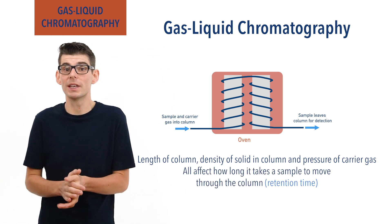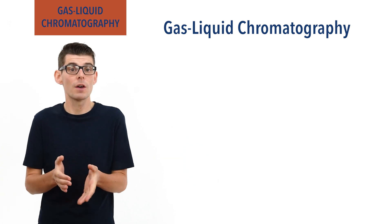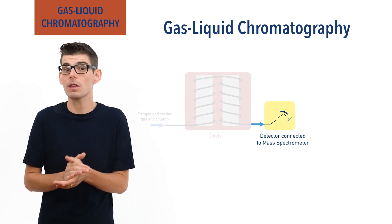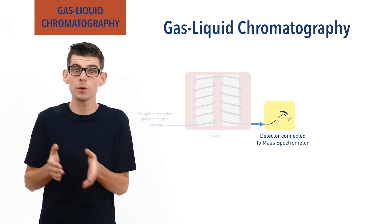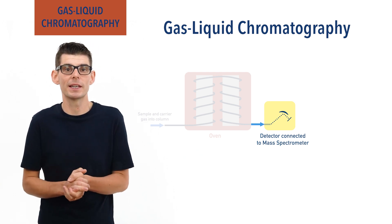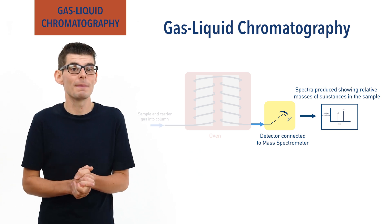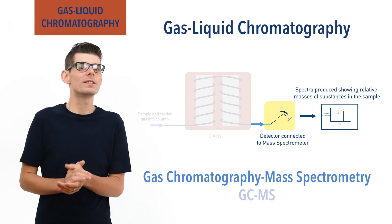Sometimes a mass spectrometer is connected to the output of a gas liquid chromatography setup and this means each substance in a mixture can be sent through the mass spectrometer to find out their relative molecular mass. This is referred to as gas chromatography mass spectrometry or GCMS.